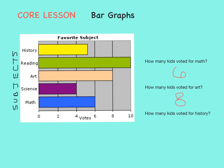And finally, what about history? Here's history on the bar graph. It has a yellow bar next to it and it goes all the way to — wait a second, this one's halfway between two lines. It's halfway between the four and the six. Well, we know halfway between four and six is five. So five students voted for history as their favorite subject.